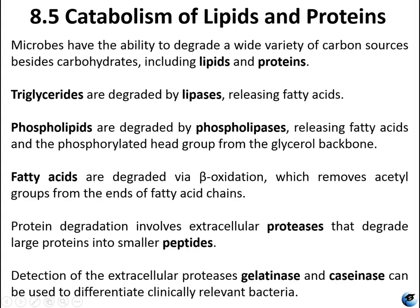Microbes can degrade lipids and proteins as well as carbohydrates. Triglycerides are degraded by lipases, and phospholipids are degraded by phospholipases, which release fatty acids and phosphorylated head groups from glycerol. Once released, fatty acids can be further degraded by beta-oxidation, which removes the acetyl group from the ends of fatty acid chains. These acetyl groups can then be coupled to coenzyme A and used in the Krebs cycle to generate energy from both phospholipids and triglycerides.